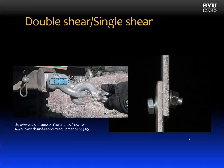One more topic: the idea of double shear and single shear. The picture we looked at before, with the bolt, is a condition of single shear — there's only one surface on the bolt that is experiencing direct shear. In this picture on the left, where we have a clevis with a pin, there are actually two shear surfaces. We call that double shear.